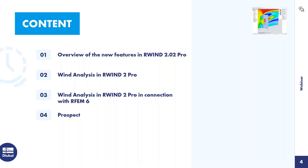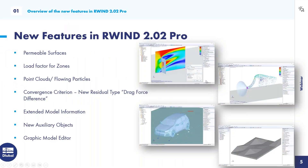I have prepared a PowerPoint presentation summarizing the main new features of RWIND 2.02 Pro. You will be able to download a PDF file later to double-check the features. I've also contributed website links to our online manual in the slides. We mainly work with an online manual rather than a printed document file.